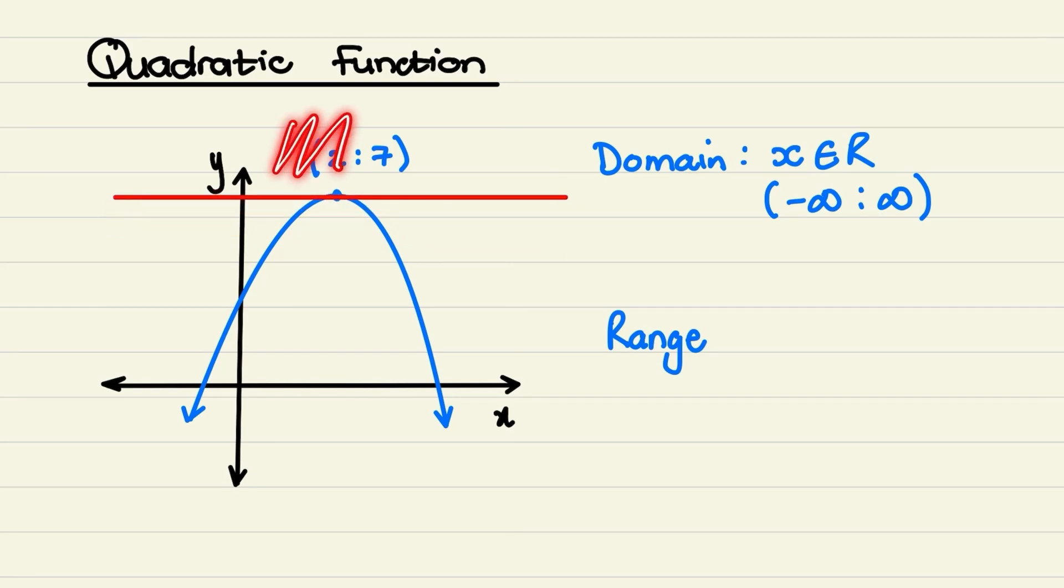And then after the turning point, the graph does not exist. So in this example, the graph has a maximum value at its turning point. And that maximum value is a y value of 7.